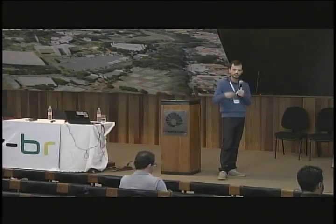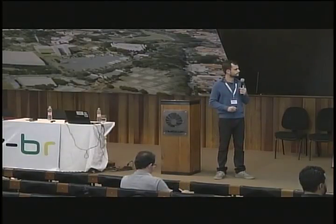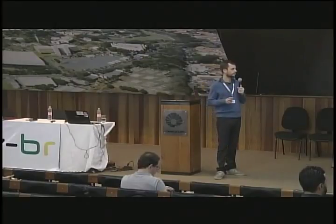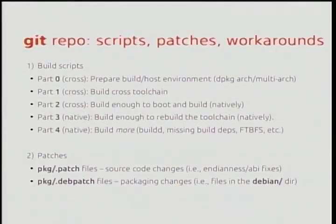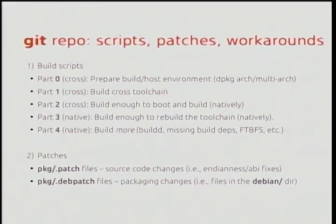The very key part of our project was this git repository, where we kept our scripts to run the first stages of this, the patches to the packages, and the definition of our workarounds. The build scripts were divided into more or less five stages. Part zero was used to prepare the build environment which would run the cross compiler. Part one would build the cross toolchain. Part two would use that cross toolchain and the cross environment to build enough packages to be able to boot and build on the native environment. Part three was already booted and running in the native environment, used to build enough to rebuild the toolchain natively. And part four, we'd build more and more stuff now that we had the toolchain and source code available.